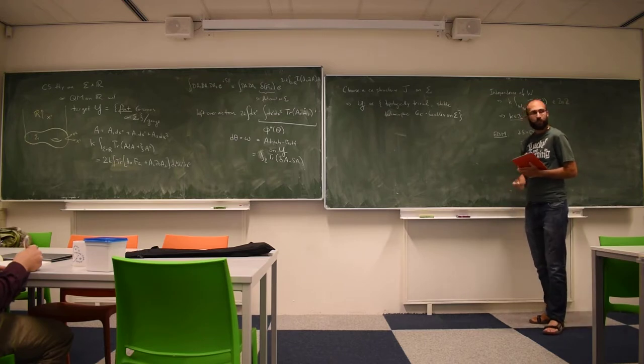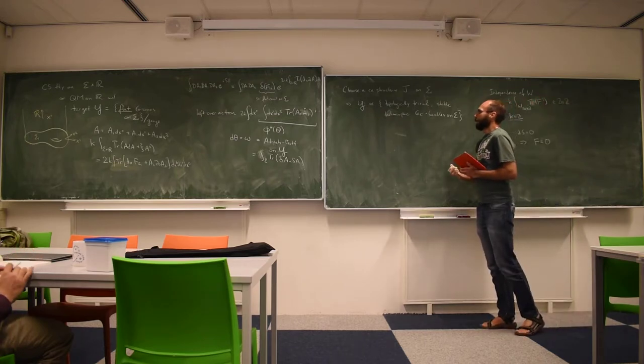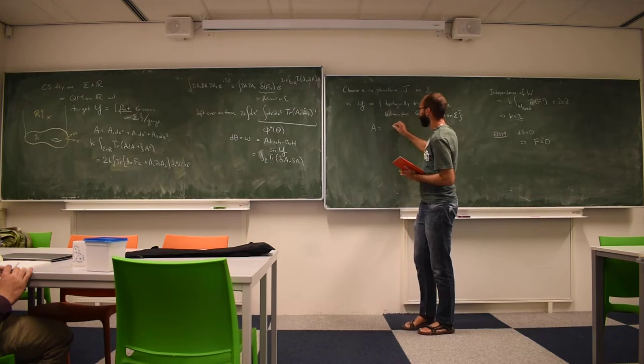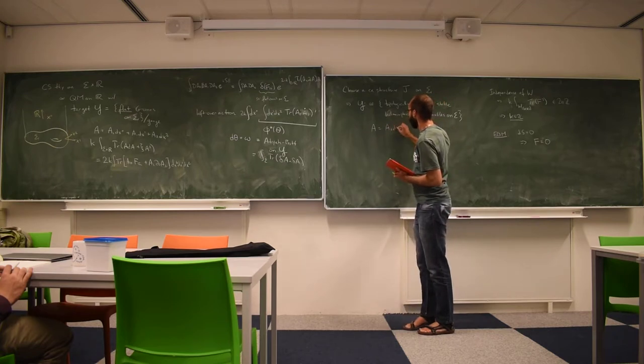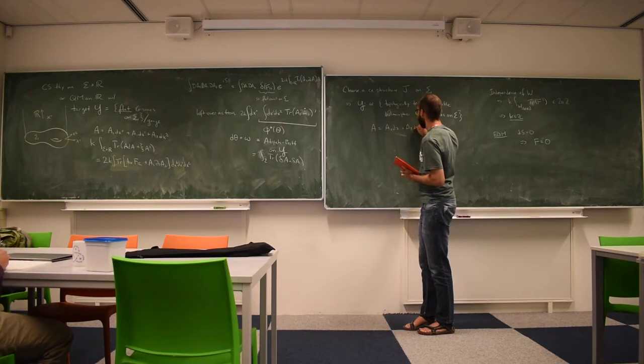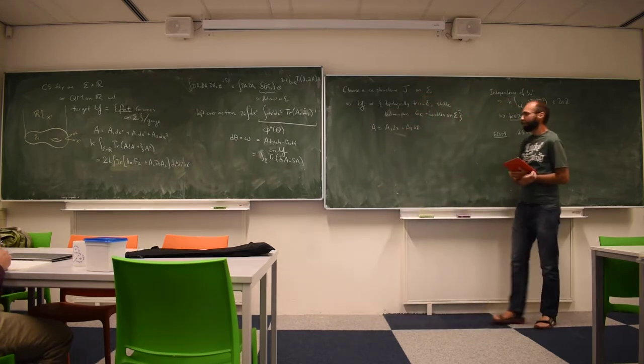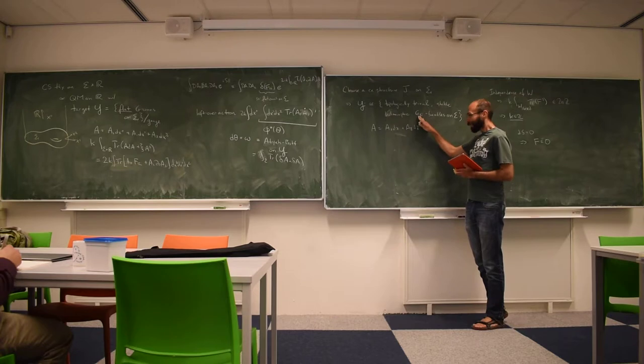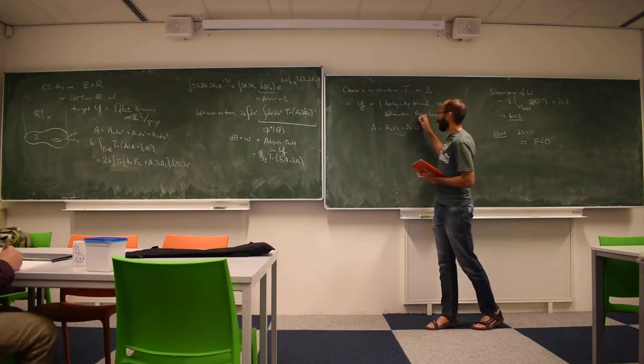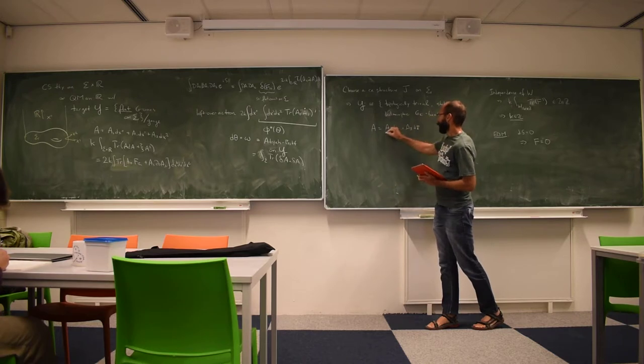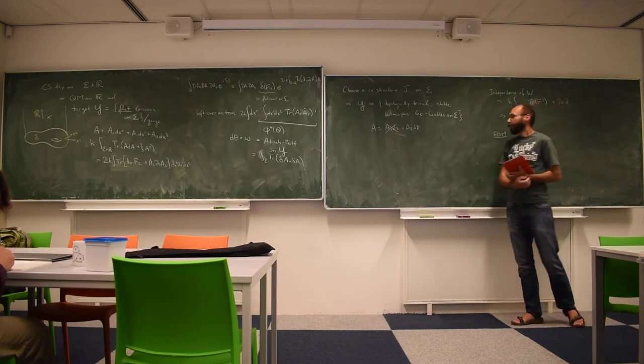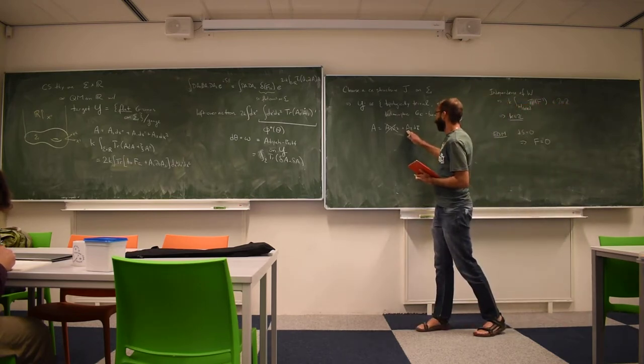There are two things that go into this identification. Roughly what one does is to take the connection along sigma, first write it in complex coordinates, and then use a complex gauge transformation to go to a gauge where the az part is zero. That leaves an az bar, which goes into the definition of the del bar operator.